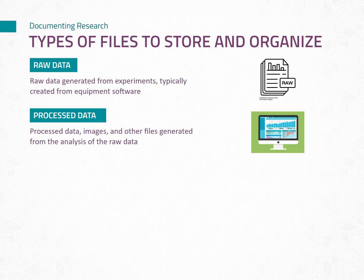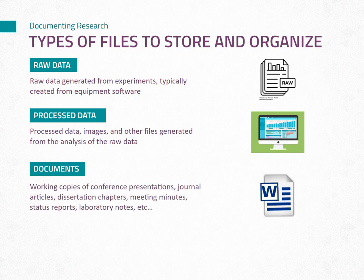The second is processed data files. Processed data files are the outcomes of analyzing the raw data files. These files can include processed images, numerical values, charts, graphs, or any derived data used to draw conclusions or support your research findings. The third is research documents. Research documents play a significant role in documenting and communicating your work. These files include draft conference proceedings, journal articles, conference presentations, dissertation chapters, meeting minutes, status updates or reports, and laboratory notes. Saving and organizing these documents within your file organization schema ensures easy access and comprehensive record keeping.